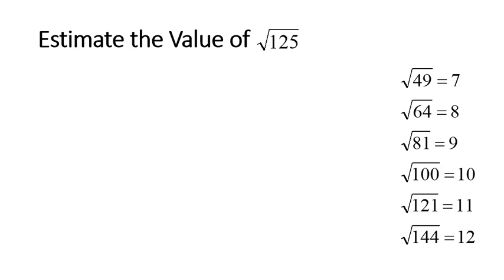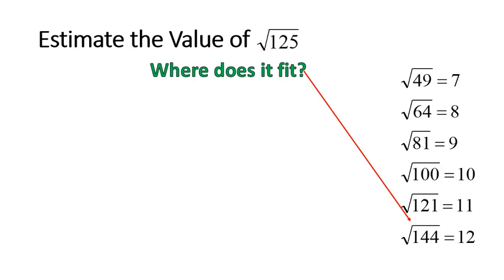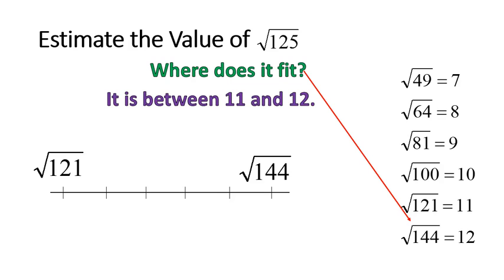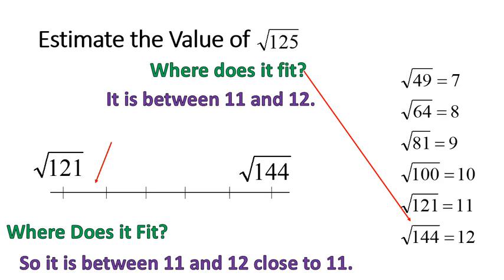For the square root of 125, following those same steps, it fits between the square root of 121 and the square root of 144 — in other words, between 11 and 12. Since 125 is much closer to 121 than to 144, we'd say it's really close to 11, probably about 11.1. If you want the full lesson on estimating square roots, there is a full lesson available.